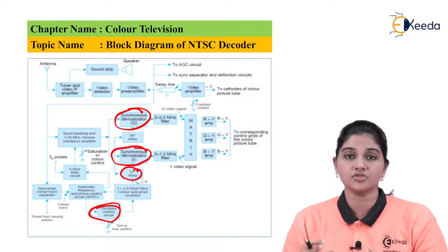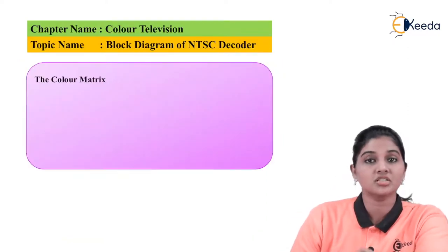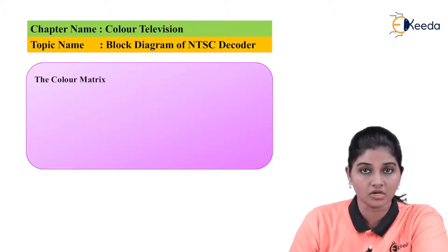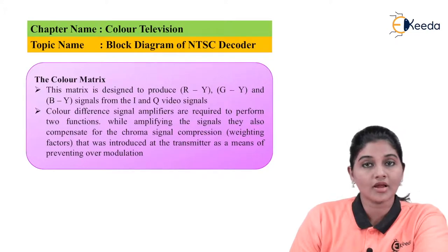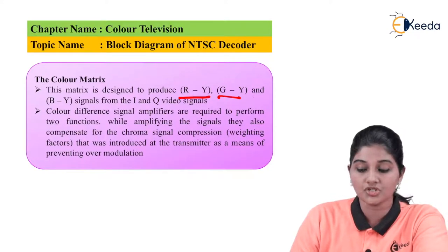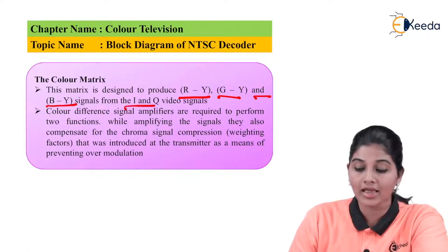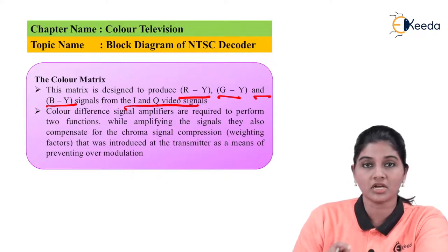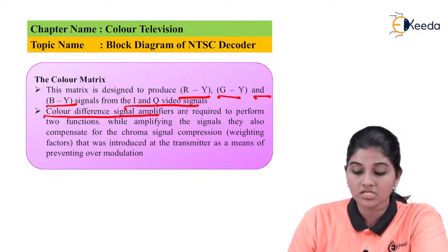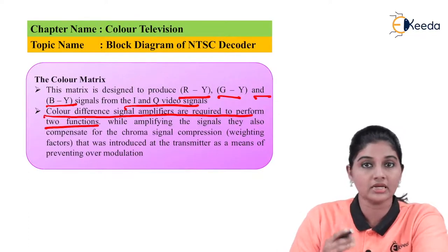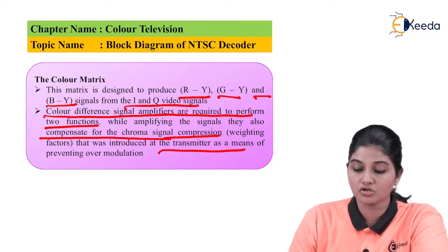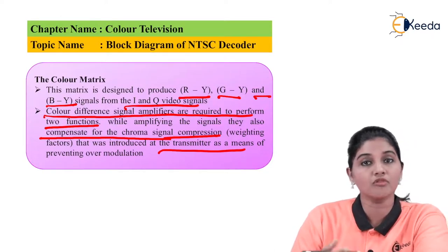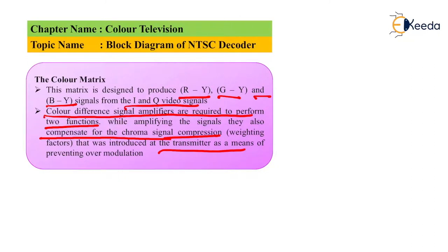The next block in the NTSC decoder is the color matrix. The function of the color matrix is to provide different color signals. A suitable color matrix is used so that different color signals can be generated — specifically R-Y, G-Y, and B-Y signals from the I and Q video signals, where Y is the luminance signal and RGB stands for the primary colors red, green, and blue. The color difference signal amplifiers perform two functions: they amplify the signal and compensate for the chroma signal compression that was introduced during transmission to prevent over-modulation.